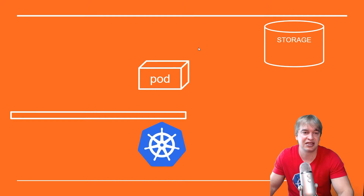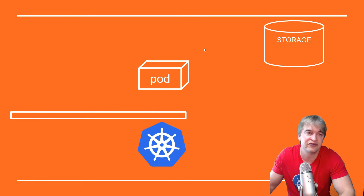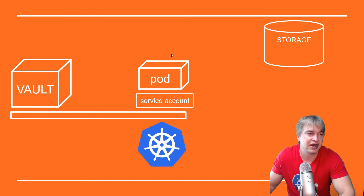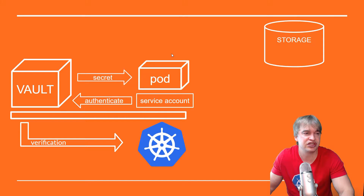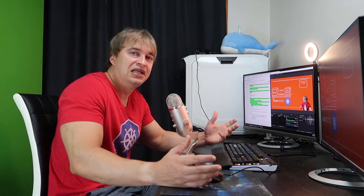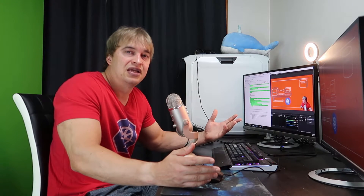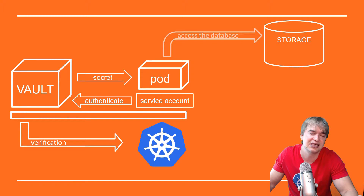How do we authenticate and trust that this pod can access the secret? When we set up Vault, we'll create a policy that binds this application to a bunch of secrets. In Kubernetes we have the concept of a service account, so we'll run this pod as a service account. Vault will use that service account to authenticate and verify through the Kubernetes API whether the pod is legitimate. We'll then deploy the injector mechanism to inject our secret into the pod — the pod itself is completely unaware of Vault's existence.